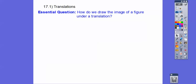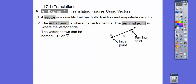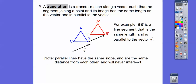So our question is, how can we draw the image of a figure under a translation? So a vector is a quantity that has both direction and magnitude. Magnitude just means length. The textbook didn't say that, but that's all it means — it has a direction and a length. So we're going to move objects in the form of a vector. The initial point of the vector is where it starts, and the terminal point is where the vector ends. A translation is just a transformation, which just means a movement along a vector such that the segment joining a point and its image has the same length as the vector and is parallel to the vector.